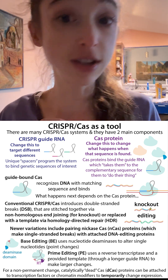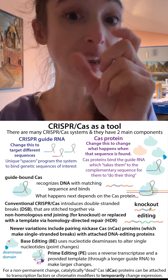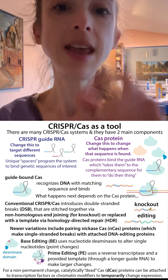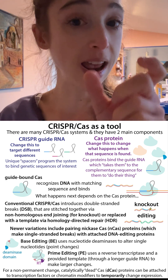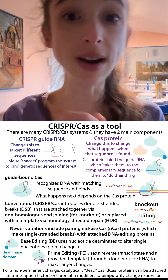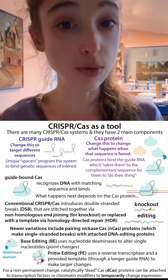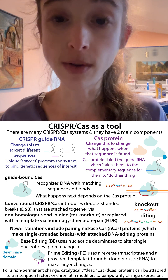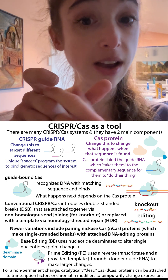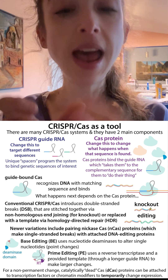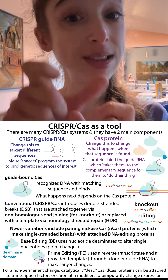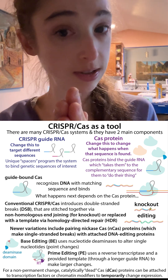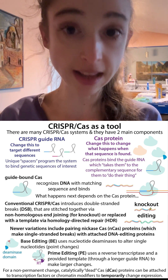At its heart, CRISPR has a guide RNA and a Cas protein. The guide RNA directs the Cas protein to a specific sequence. In its classical form, it will direct it to a sequence of DNA. What happens next depends on the Cas protein — the CRISPR-associated protein, the Cas.